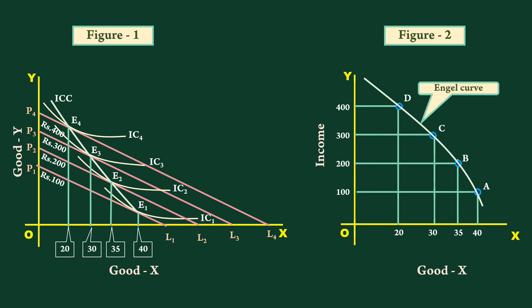The curve slopes upward from right to left. As the income increases, the quantity purchased falls. According to Engel's law, good x is an inferior good.